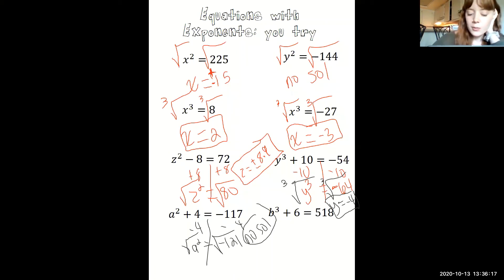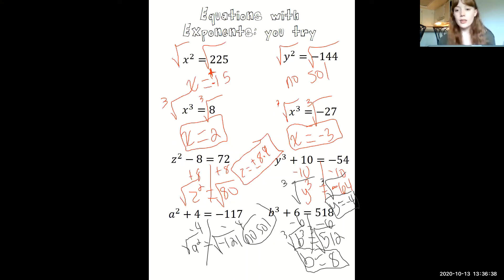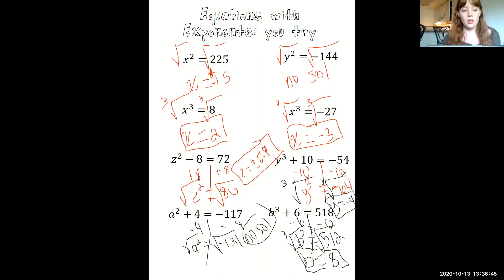The final one: we subtract 6 from both sides to get b cubed equals 512. We take the cube root of both sides to get b equals 8. Positive 8 is the only possible answer — if you tried negative 8 times negative 8 times negative 8, you would get negative 512. That is it. I'll either have a second video on how to put these in the calculator, or I'll work it in as I go.